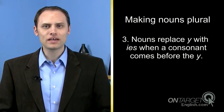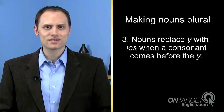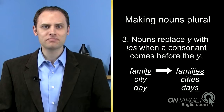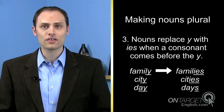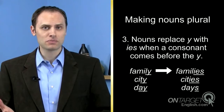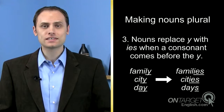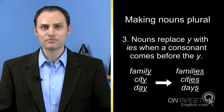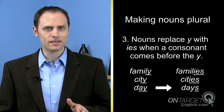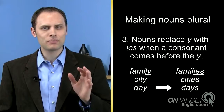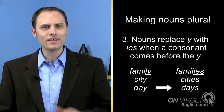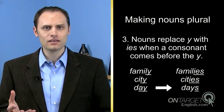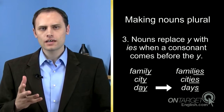Third, nouns replace y with -ies when a consonant comes before the y. Family ends with the consonant l and the letter y, and becomes families. City ends with the consonant t and the letter y, and becomes cities. Day ends with the vowel a and the letter y, and becomes days. Notice that days does not end with -ies. The reason is that a vowel, a, not a consonant, comes before the y.